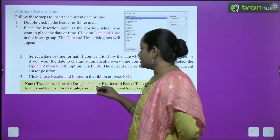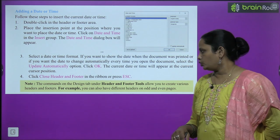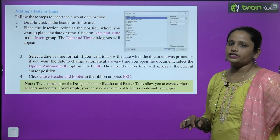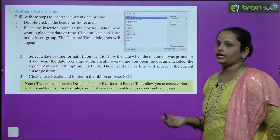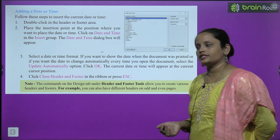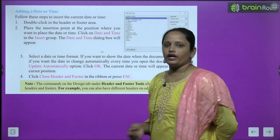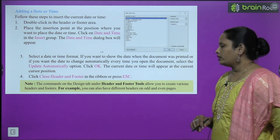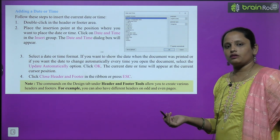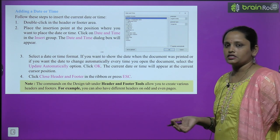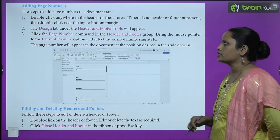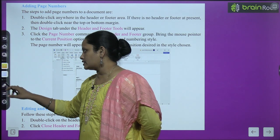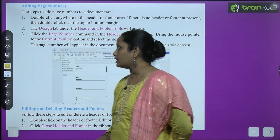The commands on the Design tab under Header Footer Tools allow you to create various headers. For example, you can have different headers on odd and even pages — it's your choice. Next is adding a page number. To add a page number, we need to go to the footer area.